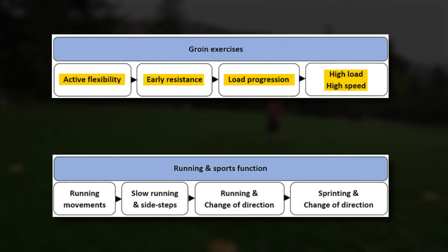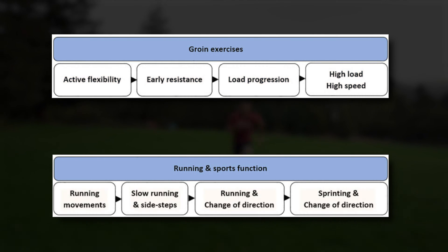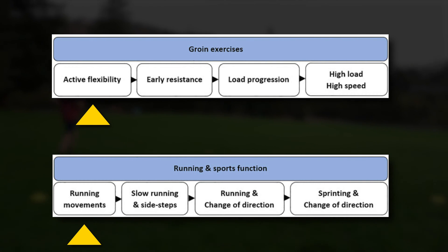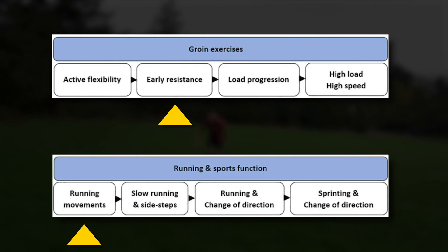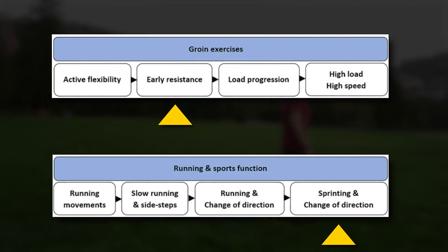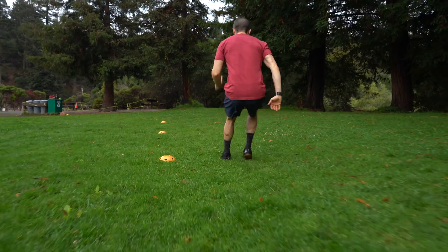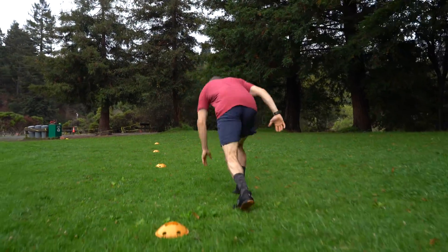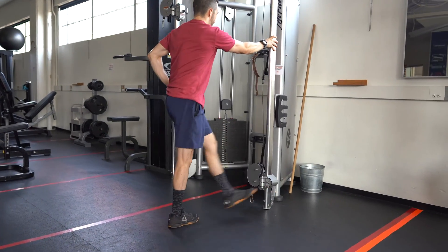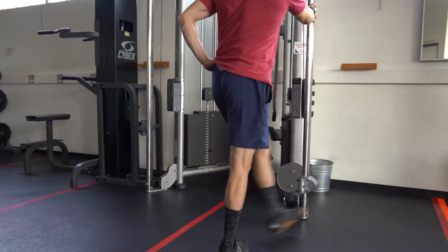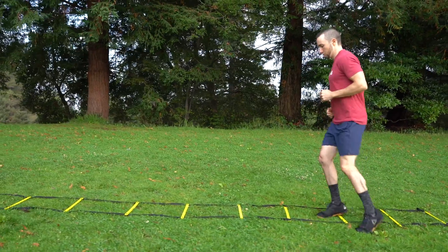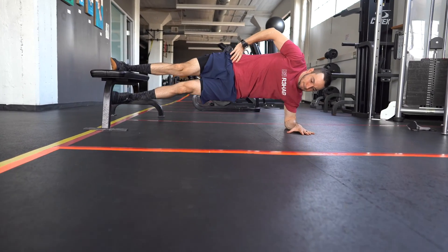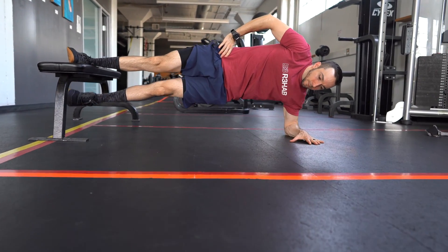I'm going to start by reviewing the four phases of the groin-specific exercise protocol, and then review the four phases of the return to running protocol. These are done simultaneously and can be progressed independently of one another, meaning you can be in phase two of the groin-specific exercises and phase four of the running protocol, or vice versa. Each phase will have set criteria that should be met prior to progressing. Also note that not everyone will have the same starting place — depending on time of injury, severity, etc., you may start from the beginning or from a more advanced progression.